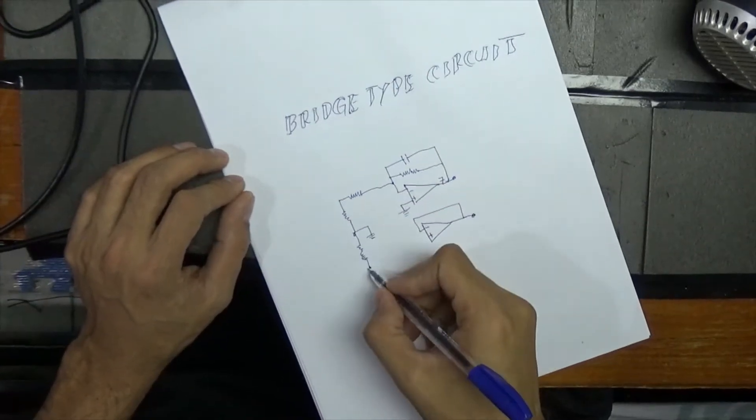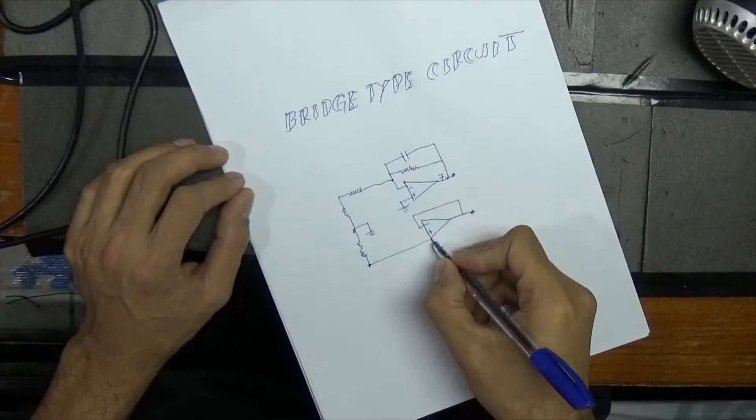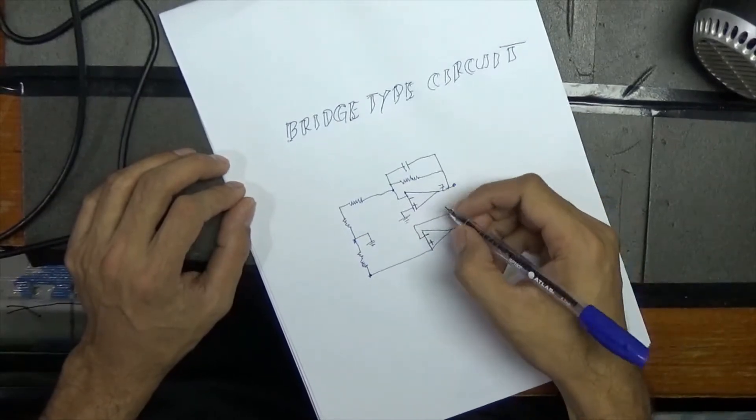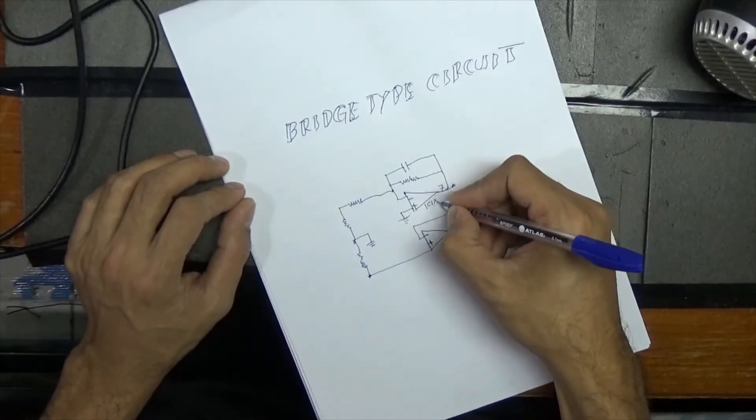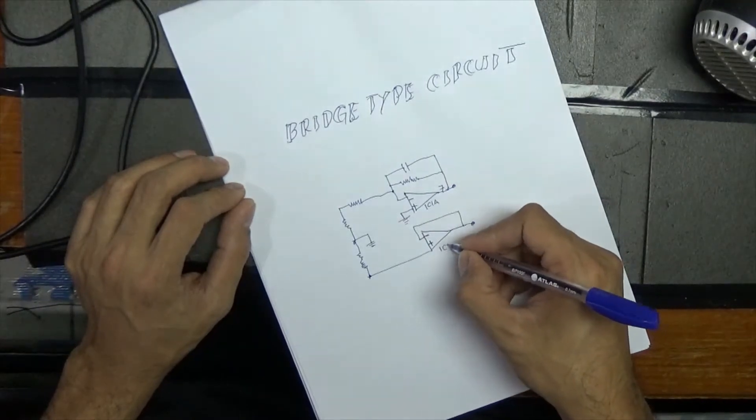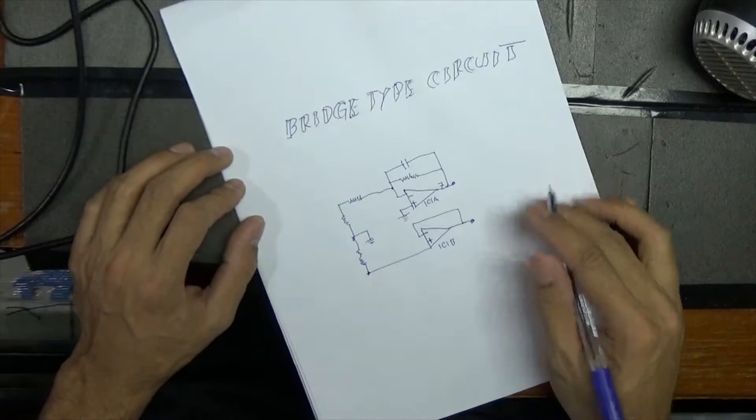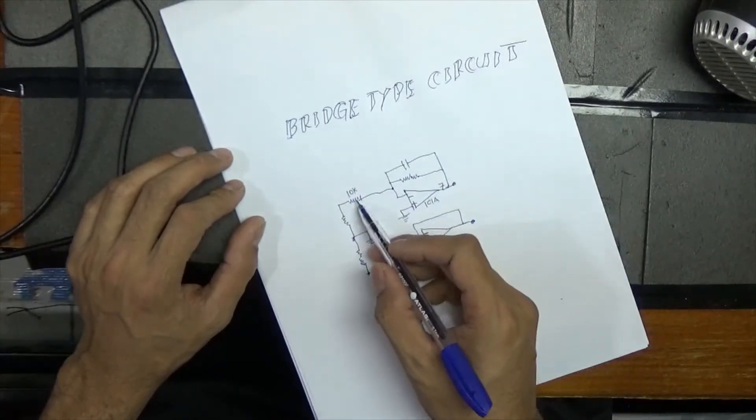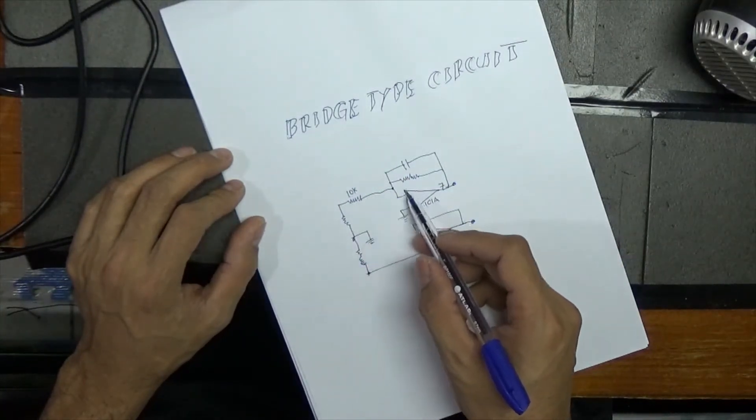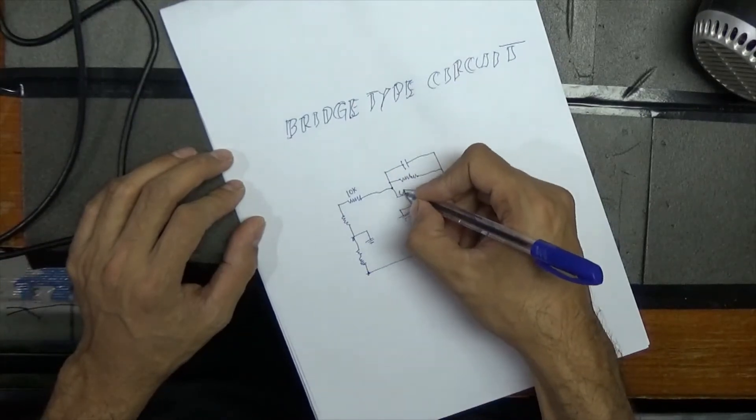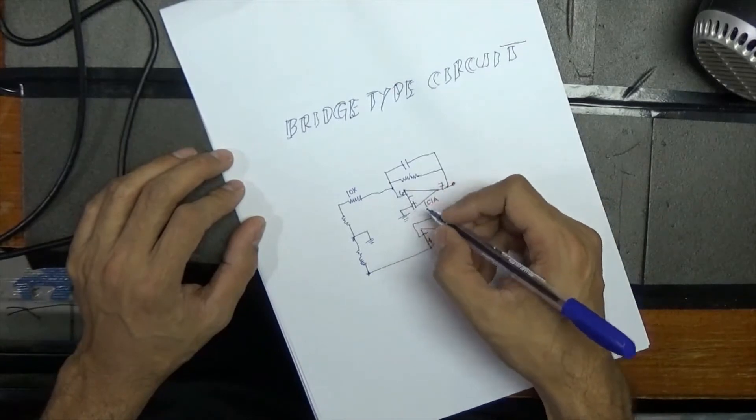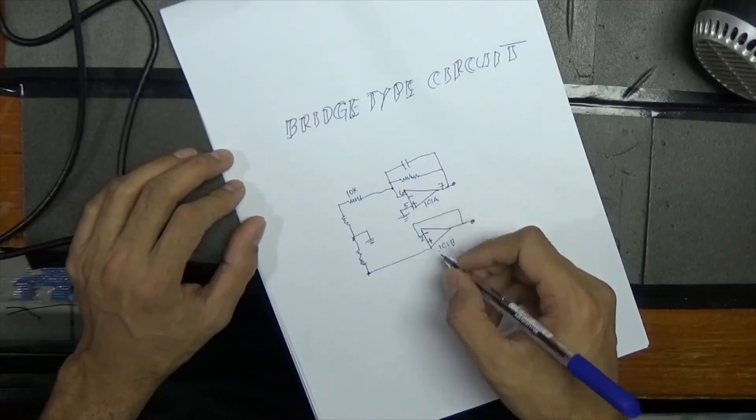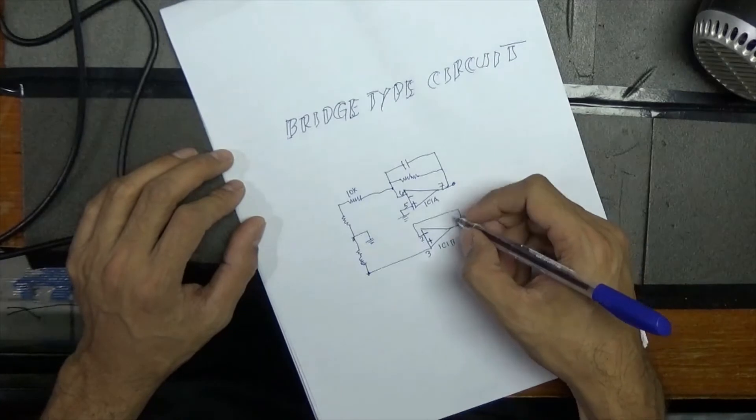This one is ground. This one is positive input, negative input, positive input, negative input. I call it IC1A, IC1B. This is pin number two, pin number three, and pin number one.